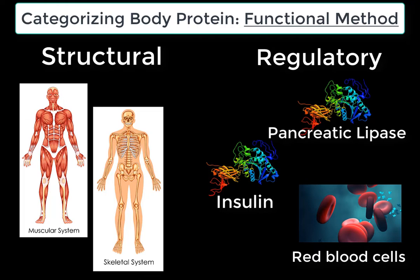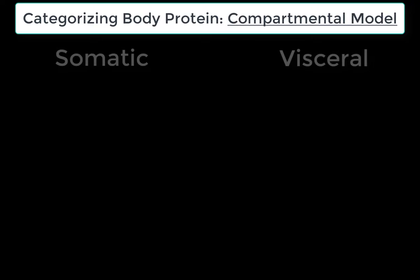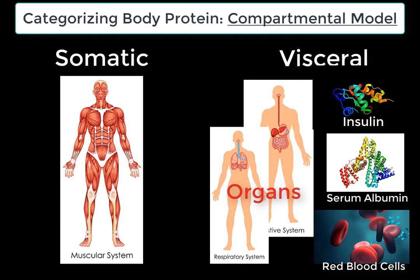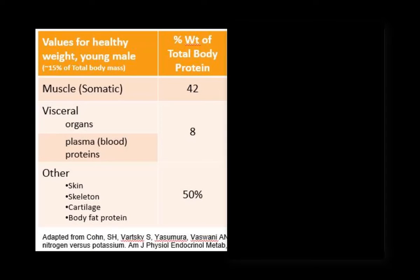Another way to categorize proteins is the compartmental model, which has two primary compartments: somatic and visceral. Most somatic proteins are structural proteins such as skeletal muscles. Visceral proteins include regulatory body proteins but also organs and blood proteins. A summary table shows that somatic and visceral proteins together make up about half of overall body proteins, with the remainder — skin, skeletal cartilage, and other tissues — not fitting neatly into either category.